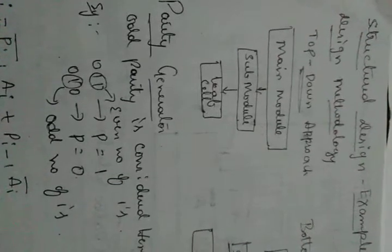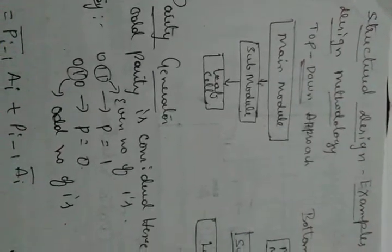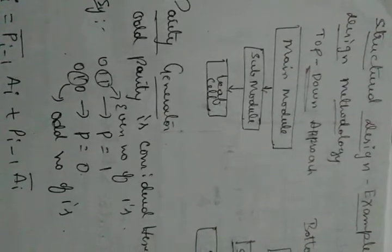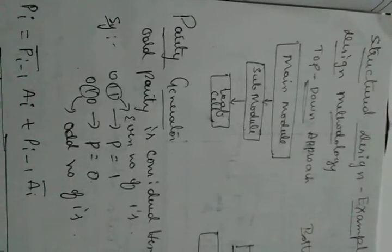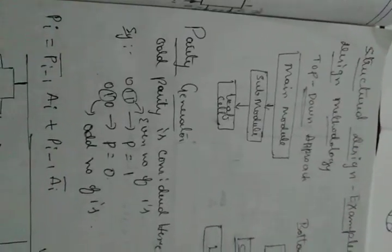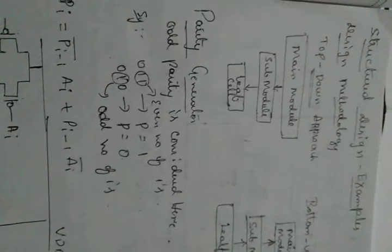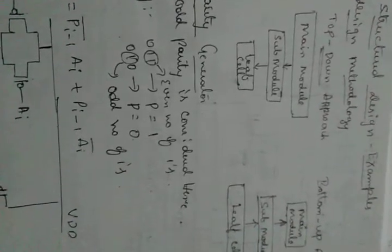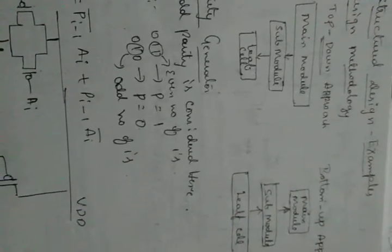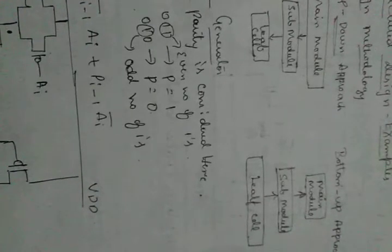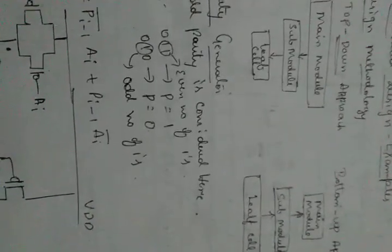Based on these approaches, some structural design examples are the parity generator, the multiplexer, and PLA (Programmable Logic Array). First we'll discuss the parity generator. A parity generator is a combinational circuit in VLSI designed to indicate the parity of binary numbers, shown as an n+1 bit input.